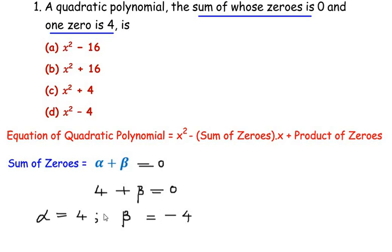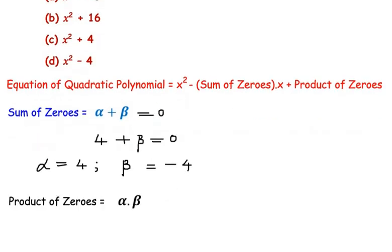Now, once we have got this, we can easily find the product of the zeros. So let me write the equation of product of zeros. Product of zeros is given as alpha times beta. So the value of alpha was given as four and we got the value of beta as negative four. So four times negative four will give us negative 16.